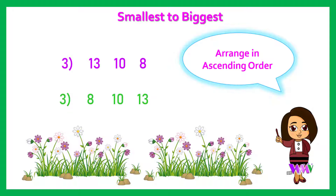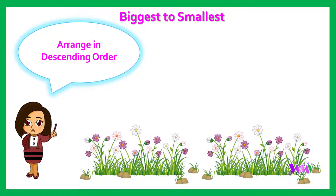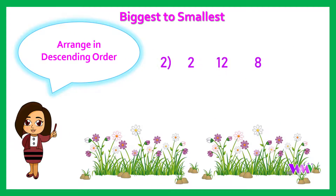Let us now arrange the numbers from biggest to smallest, that is in descending order. The numbers are 13, 19, 7. The descending order for the numbers 2, 12 and 8 will be 12,